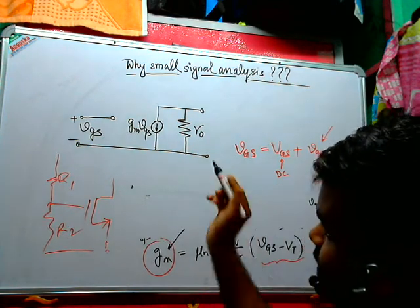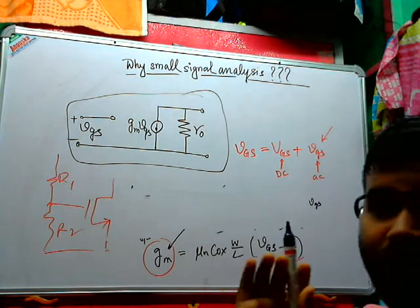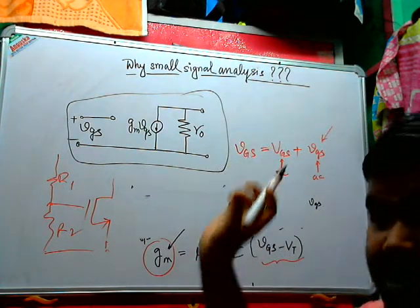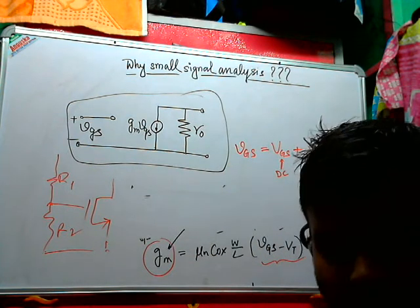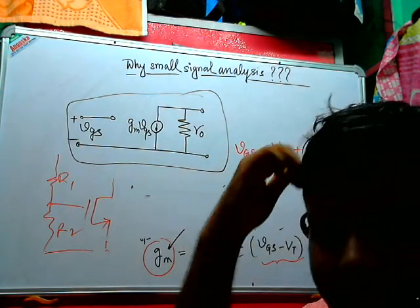In that case we can say that this is a linear model of the MOSFET. This is why the word small signal is very important. So hope you have understood this concept, this very beautiful concept. Thank you.